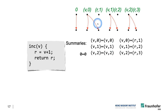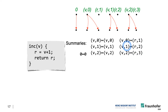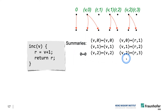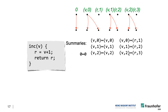But then we also have these summary edges that go to the respective return values R, and this is represented by these mappings here. That's again this extensional view of defining a function — in this case a summary function. You can see this as mappings, but you can also see it as a single extensional definition of a function that is defined through these individual mappings.